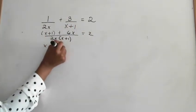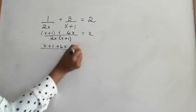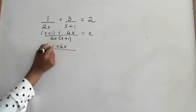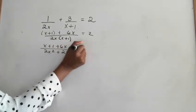x plus 1 plus 6x. That's the same as, well, let's leave that for now. Then we have 2x times x is 2x squared, plus 1 times 2x is 2x, still equal to 2.